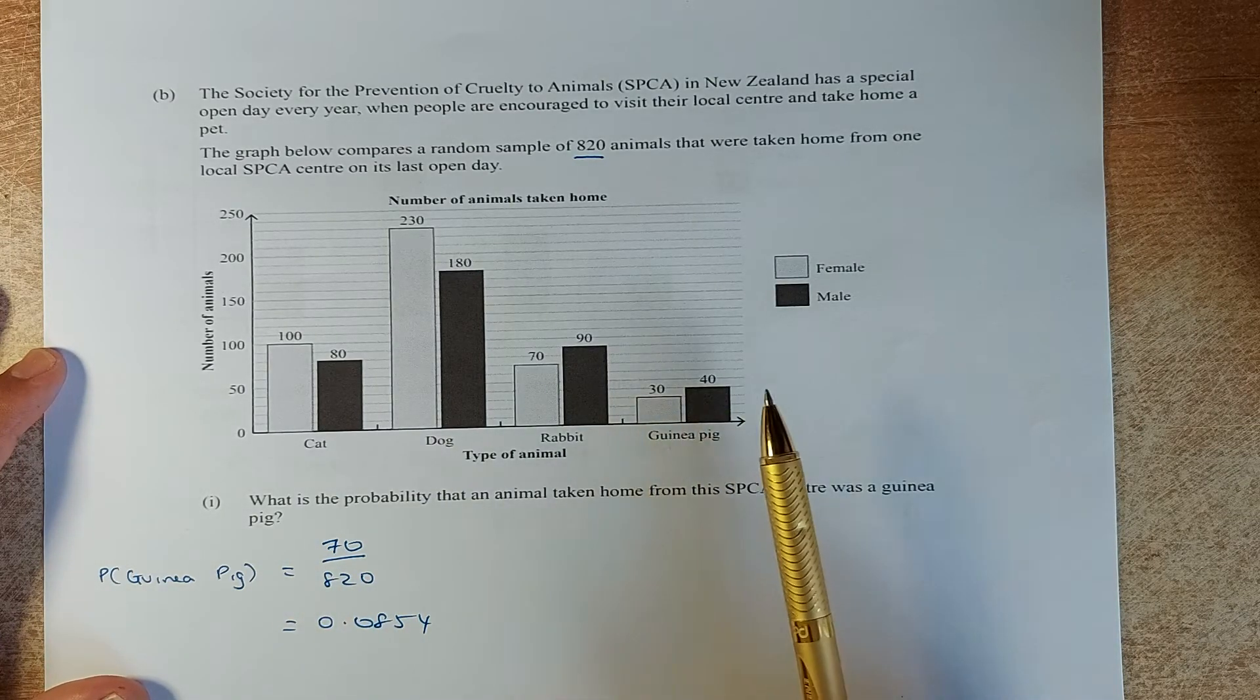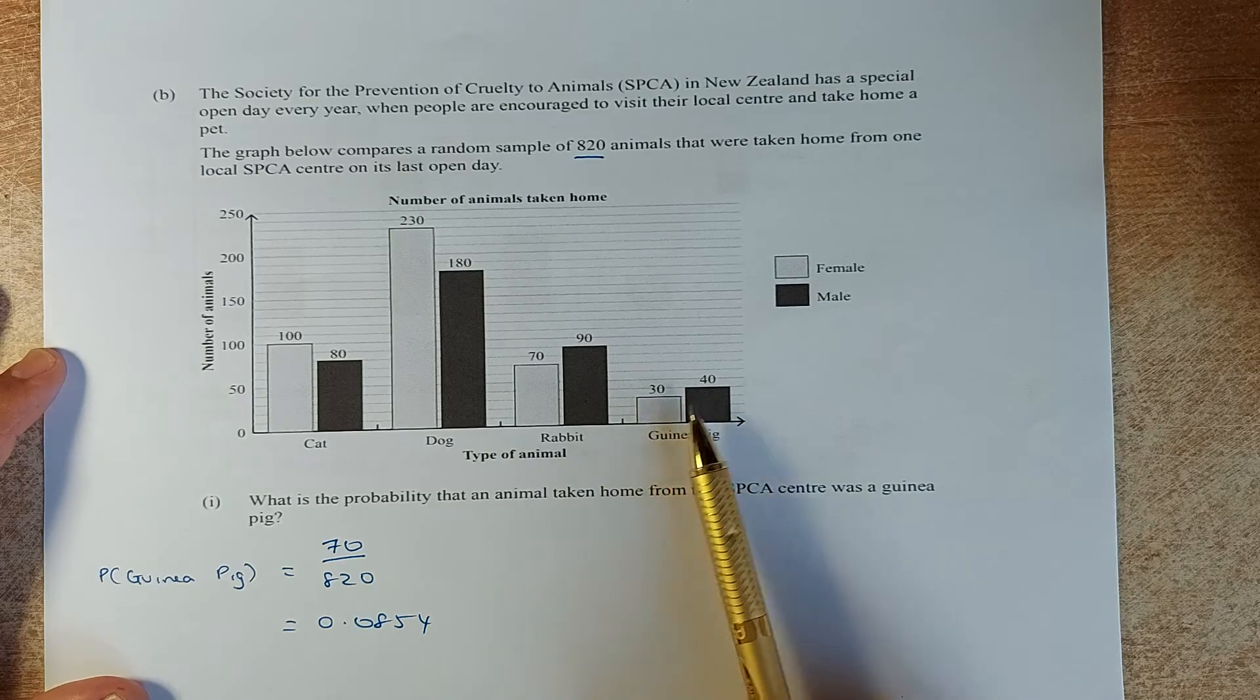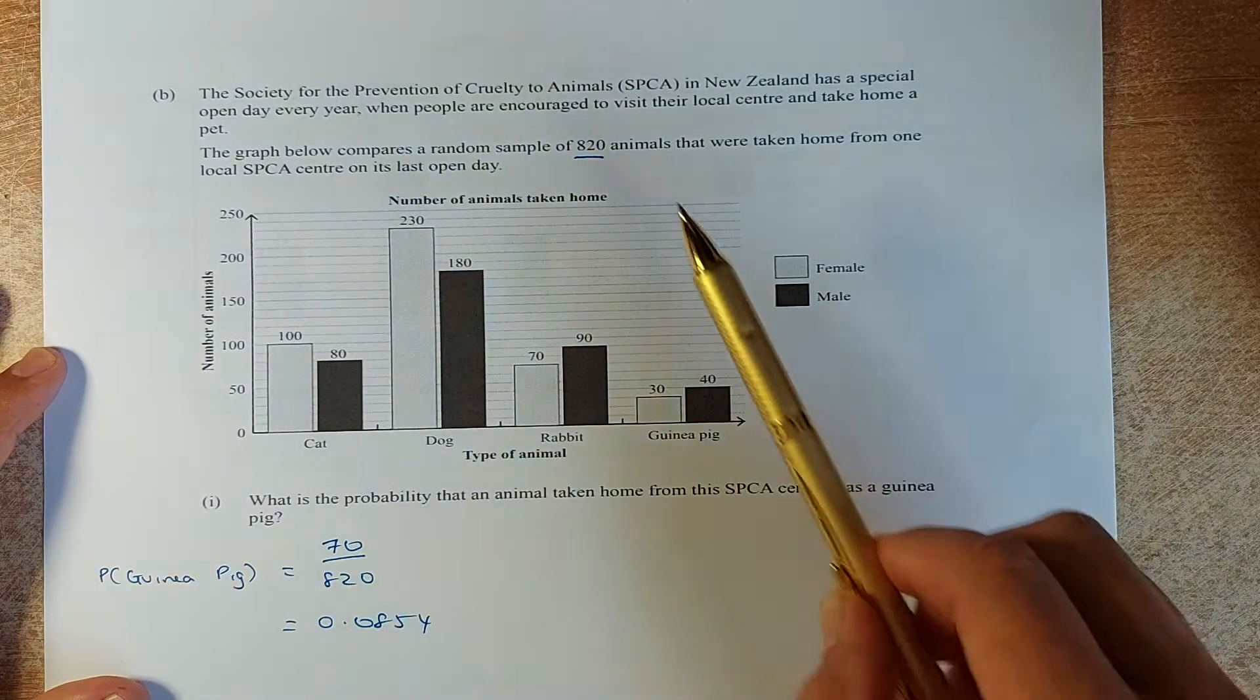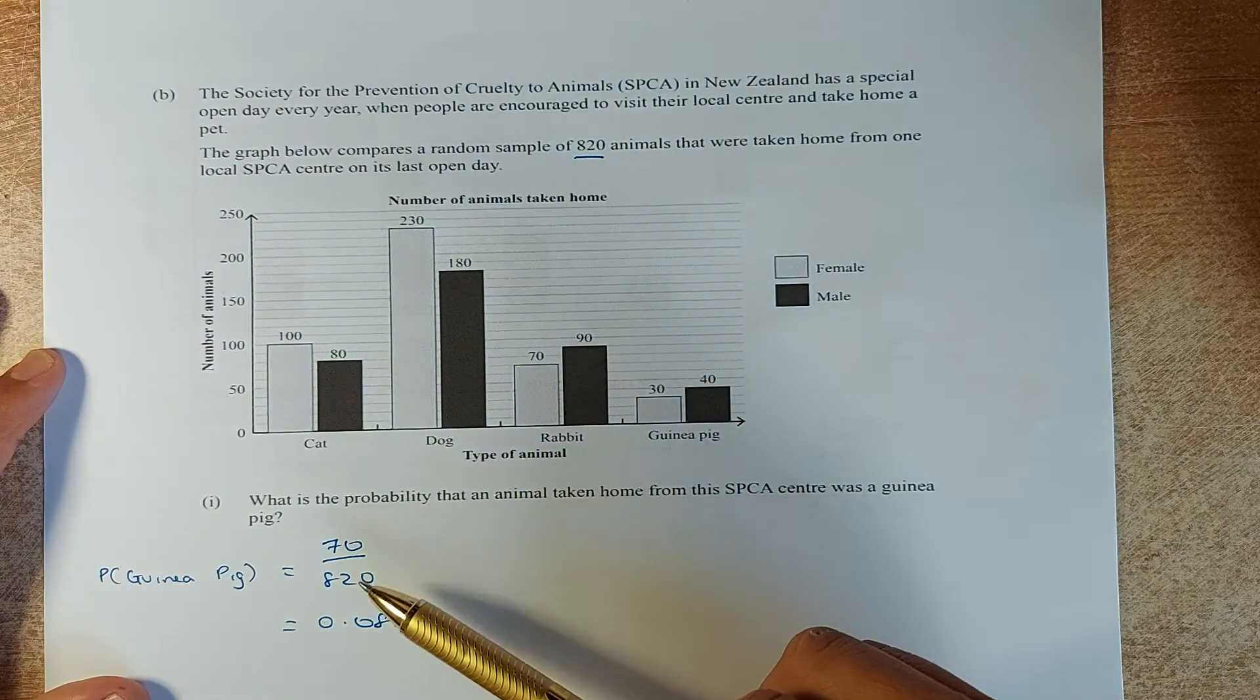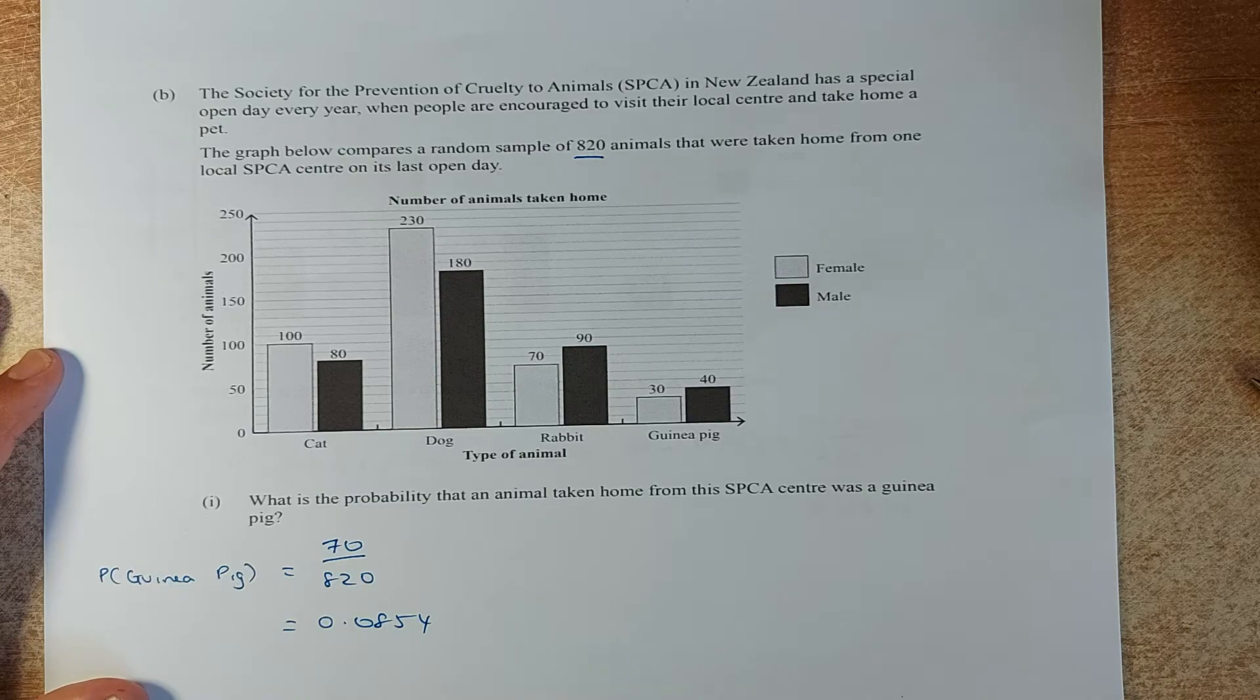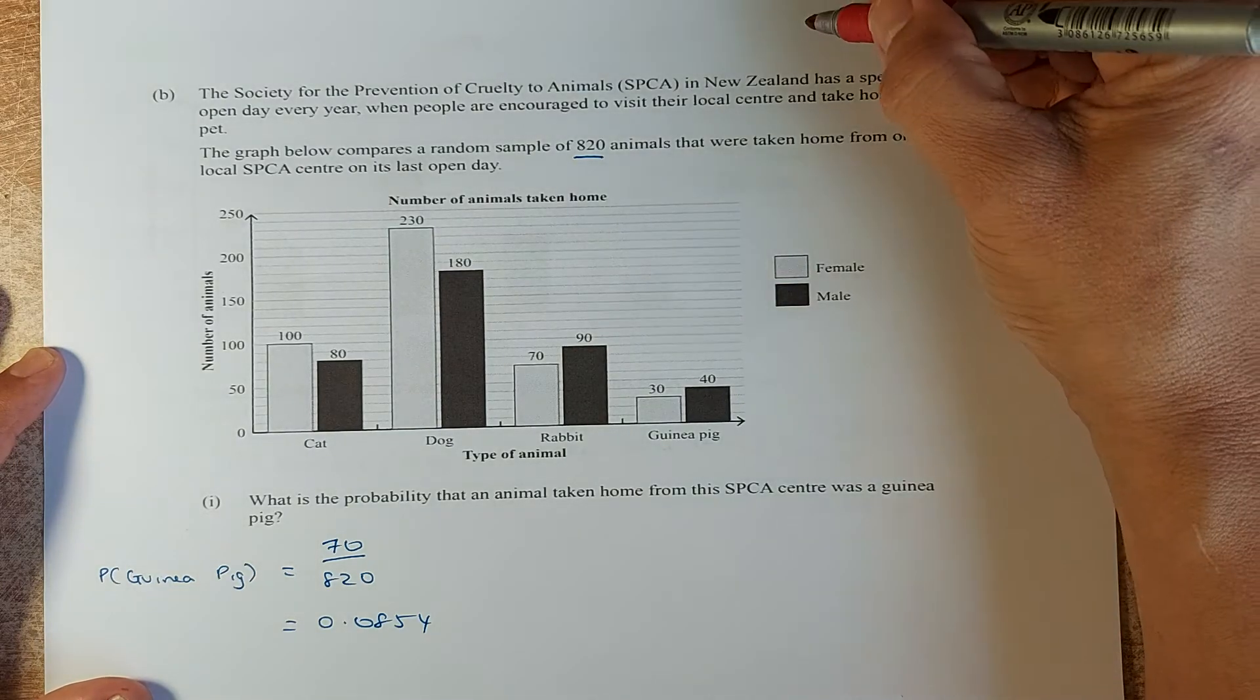The first question is very simple. What is the probability that the animal taken from the SPCA was a guinea pig? There are 30 female and 40 male, so total there will be 70 guinea pigs out of the total number of animals, which is 820. So 70 divided by 820, and the answer is going to be 0.0854, and that will give you an achieve.